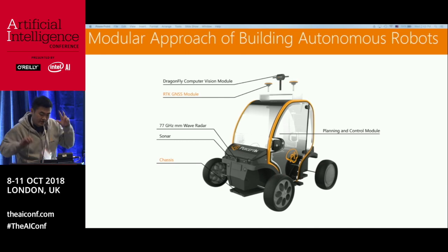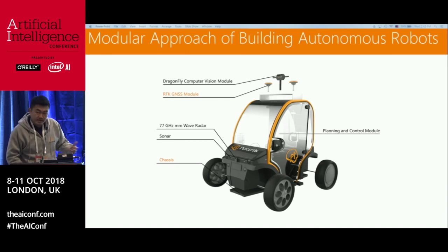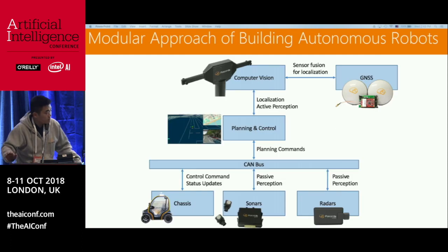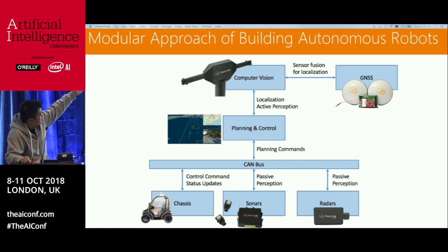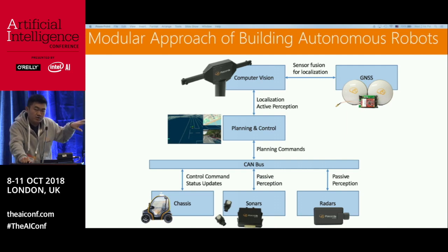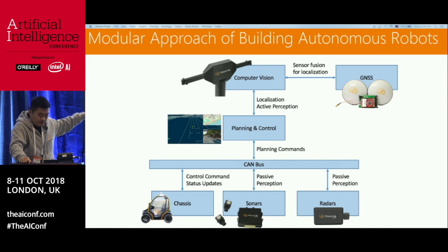The main compute module, or the brain of the vehicle, is the planning and control module. The architecture has localization and perception feeding into the center, which is planning and control. Once information goes through planning and control, it goes down to execute.